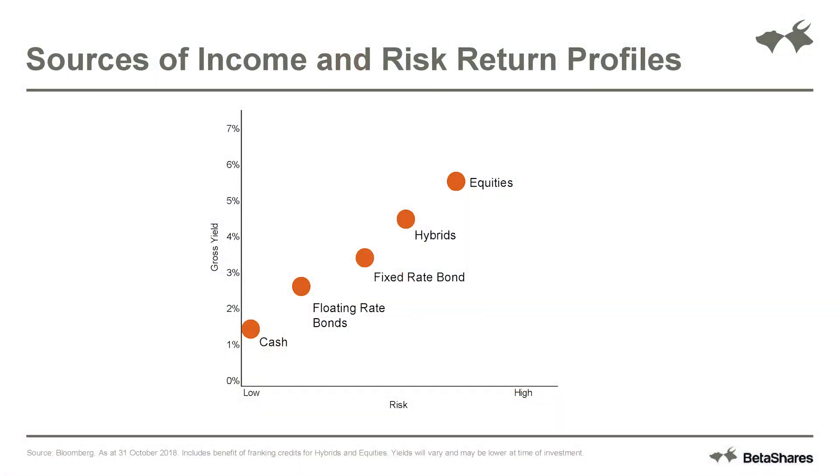We'll now look at some ways to invest on the ASX to help avoid yield traps. One thing to remember is that the ASX historically was a place to buy and sell shares, but these days it's so much more than that. You can invest in cash funds such as Triple A, which yield around 2%; floating rate bond funds such as QPON, yielding about 2.8%; fixed rate bond funds such as CRED, which yield about 4.1%; and then through to hybrids and equities, which we'll spend a little more time on.